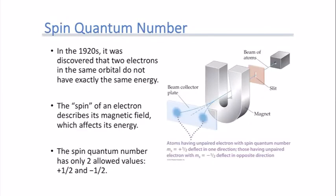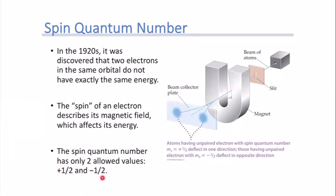Looking at the spin quantum number a little more: in the 1920s, it was discovered that two electrons in the same orbital don't have the exact same energy — the energies are slightly different. They had a beam of atoms going through a slit and then through a magnet. The magnet would cause the electrons to veer either to the right or the left, indicating that they had an m sub s of positive one-half or negative one-half, deflecting either in the direction of the field or opposite of it.